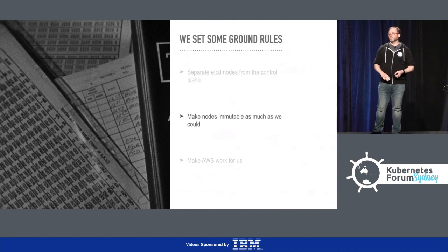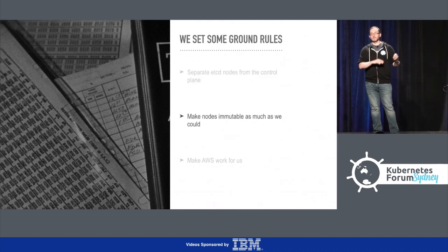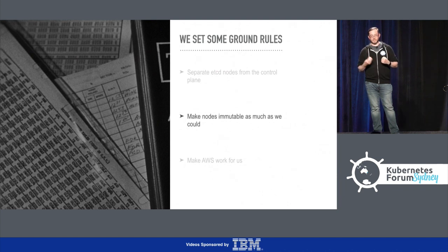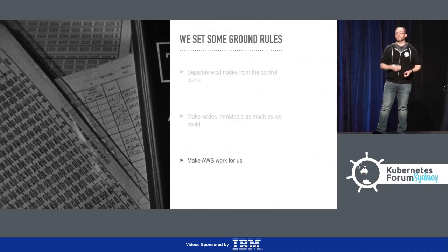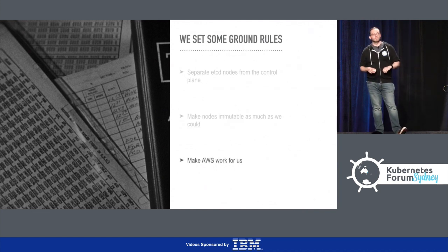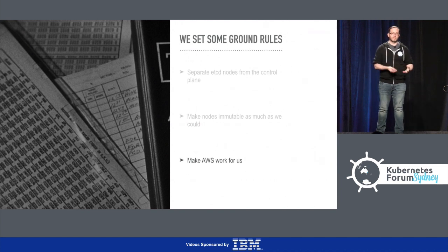We wanted to make the nodes immutable as much as we could. Everyone in the team at the time was old-school sysadmins. We had found that immutable infrastructure saves you from so many problems. Also, we were running in AWS, and so we wanted to try and use whatever AWS primitives we could to make things easier and make AWS work for us.